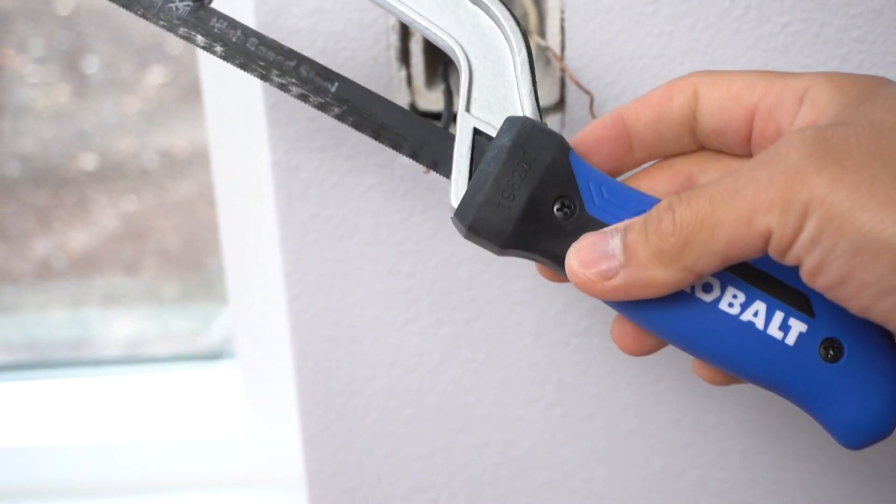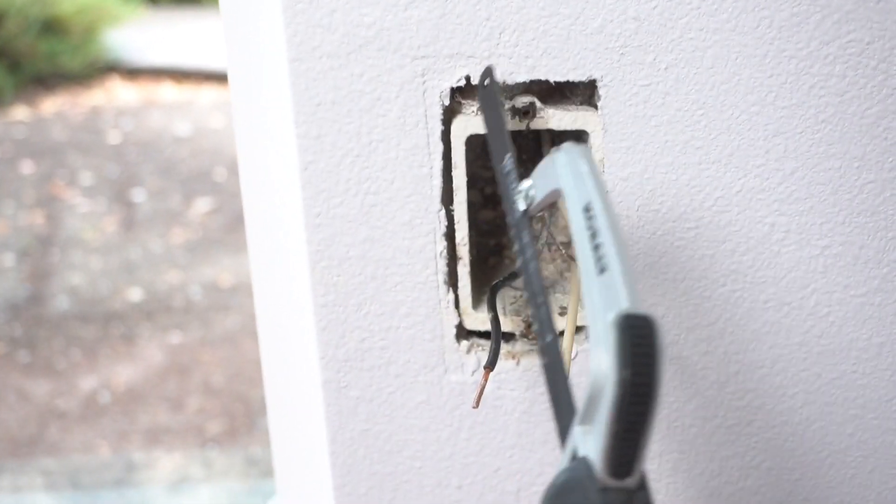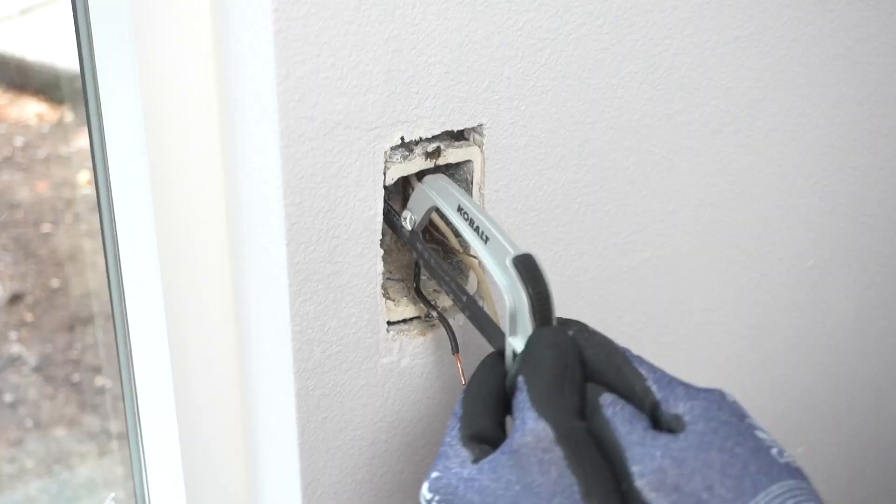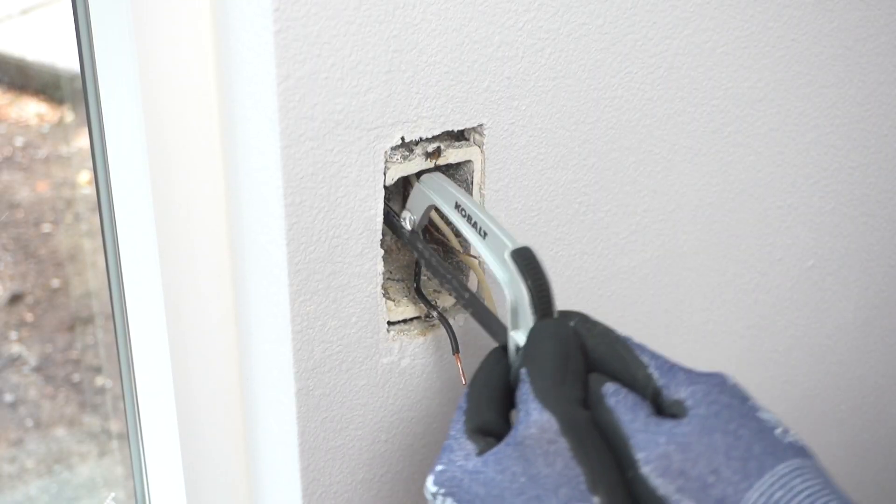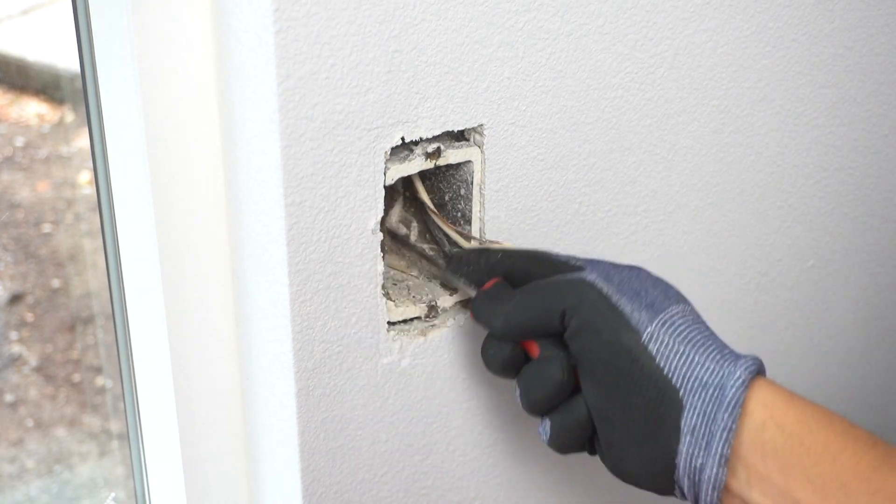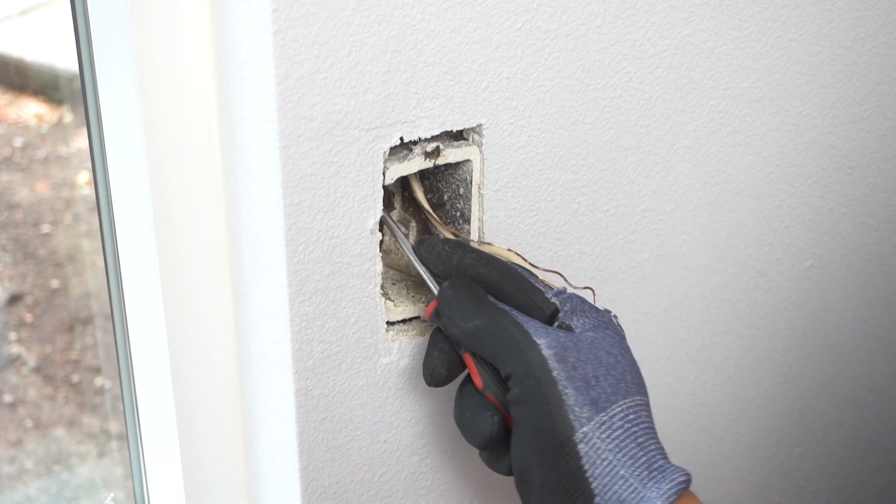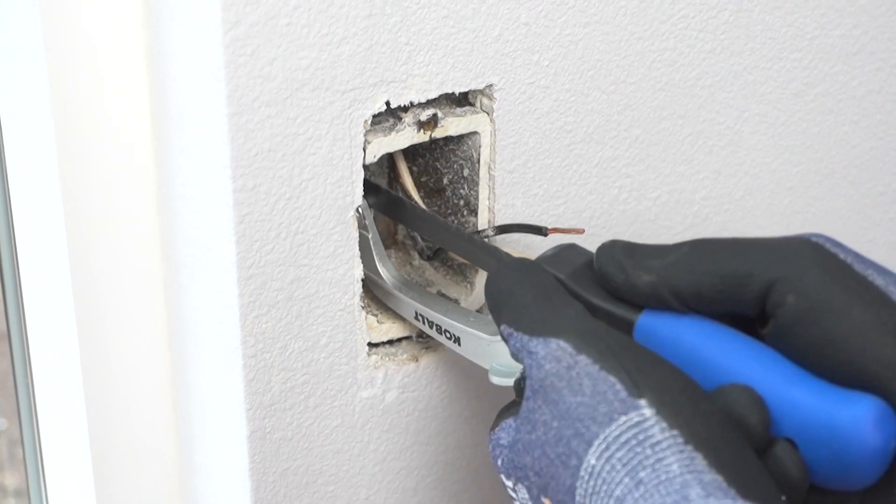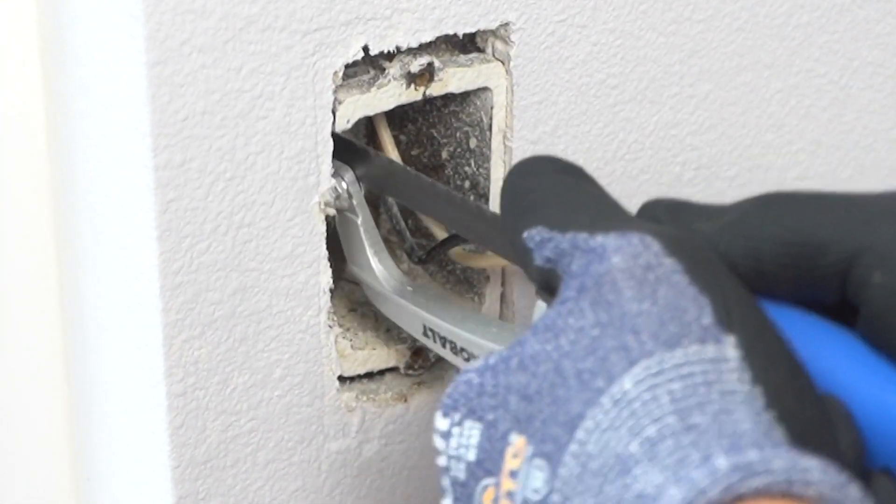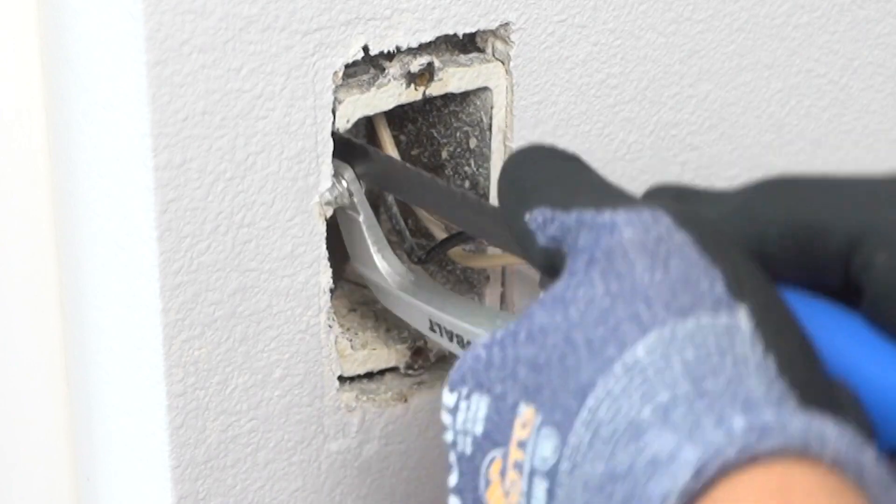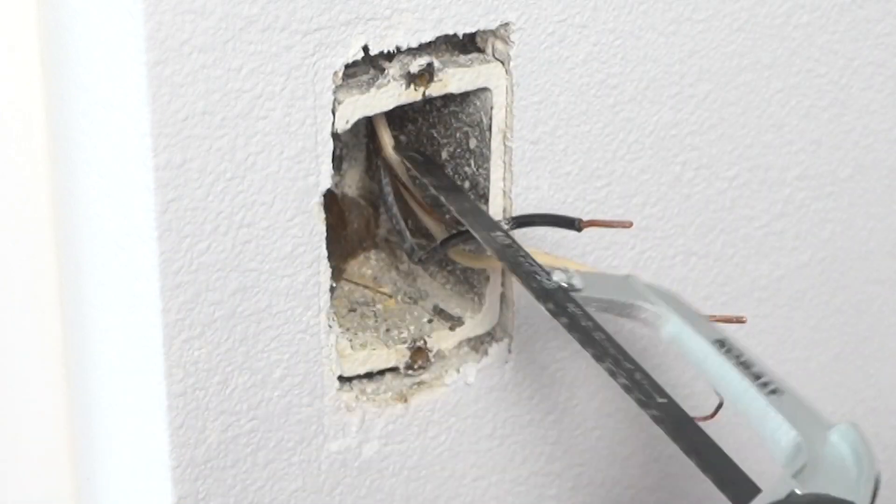But what we're going to do is we need to cut this old junction box off. So two options you got: one where you can use this handheld hacksaw, which will take you a very long time. It does take a lot of work. I got impatient, actually got a flathead screwdriver and started prying that off, trying to attack it in different ways, which is very, very time consuming and it actually kind of damaged my drywall on that perimeter right there.